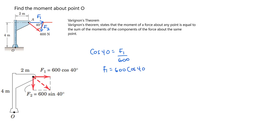So F1 equals 600 cosine of 40 degrees, and F2 equals 600 sine of 40 degrees. F1 is the x-component and F2 is the y-component.